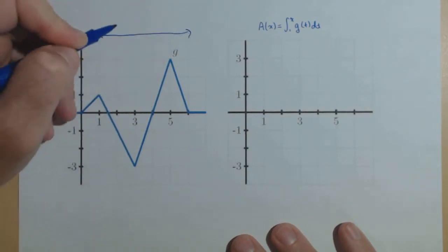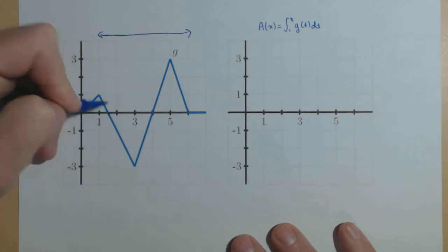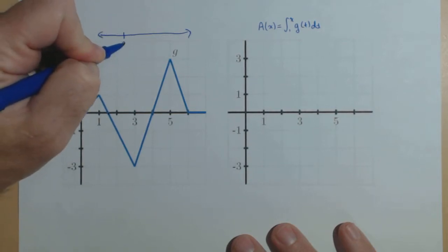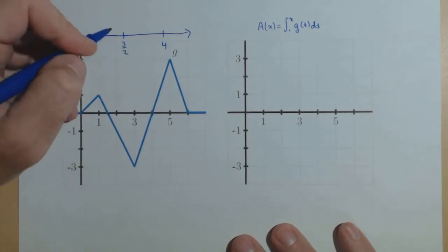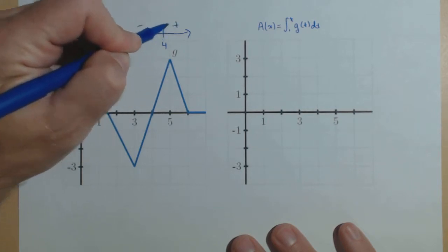It looks like we have zeros at about three halves, or one and a half, and at four, and our derivative, g, goes positive, negative, positive.